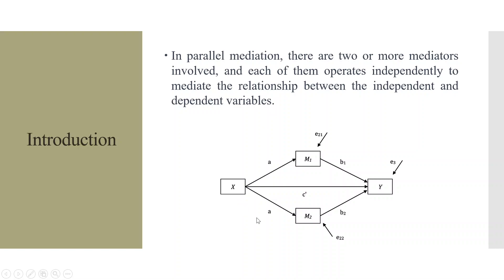Let's try to understand this concept from this diagram. X affects Y directly. X also affects Y through the indirect routes M1 and M2. So X influences M1, M1 influences Y. X influences M2, M2 influences Y. So this is known as mediation.